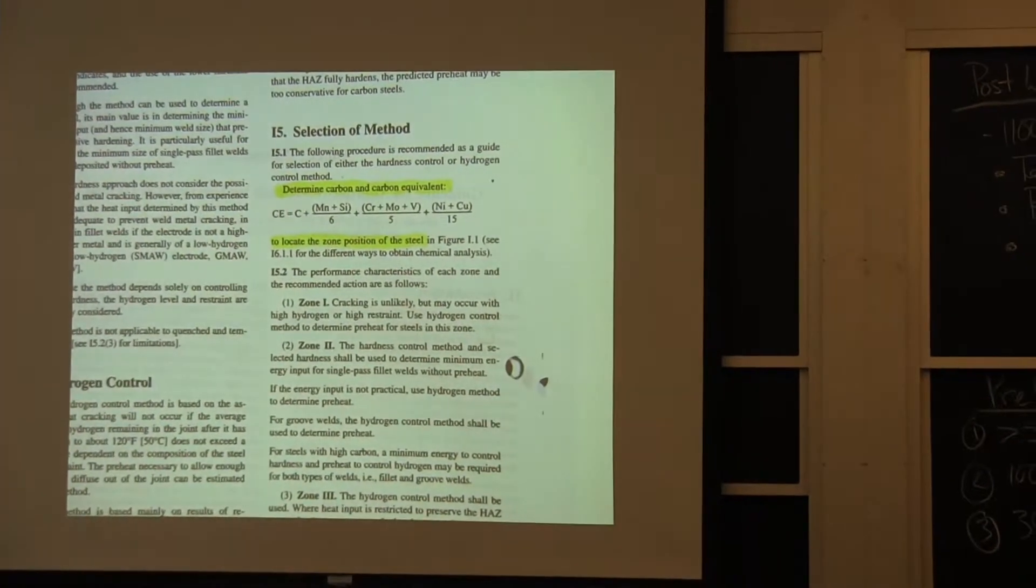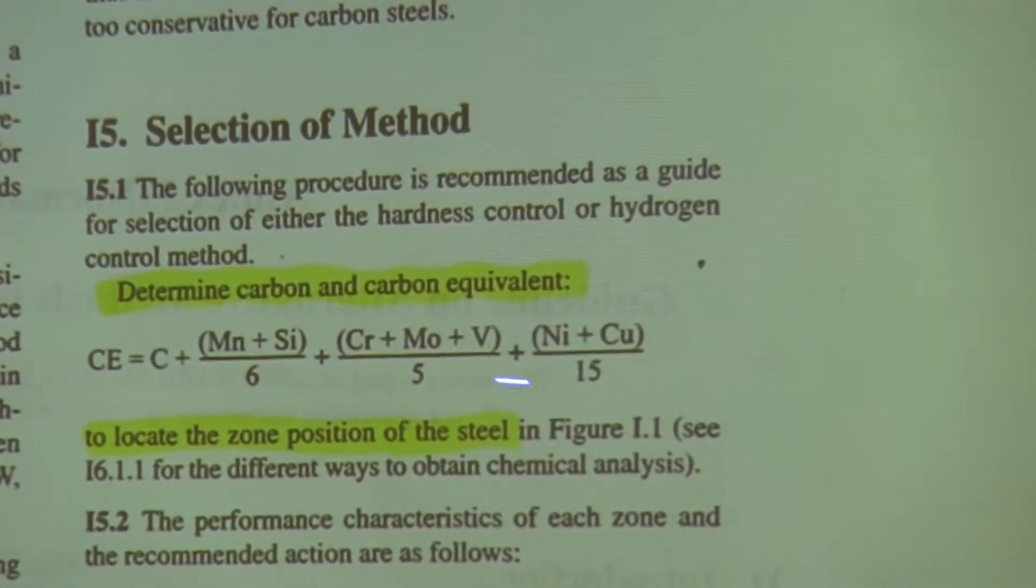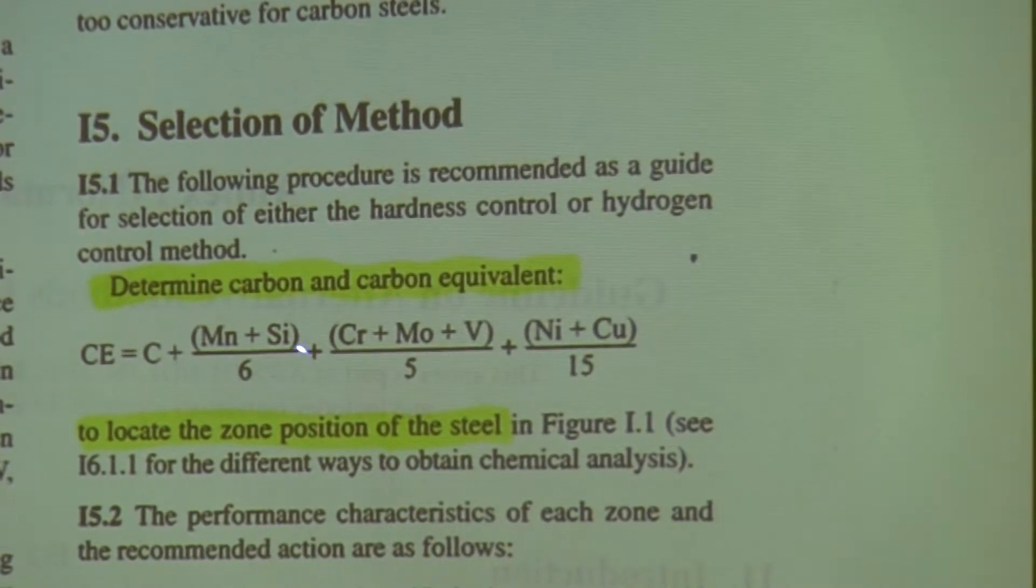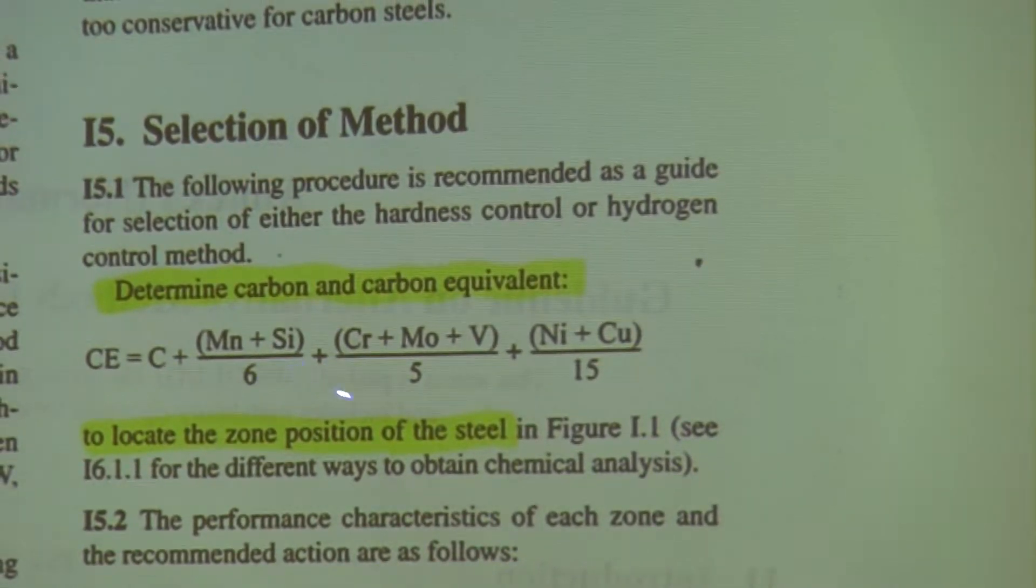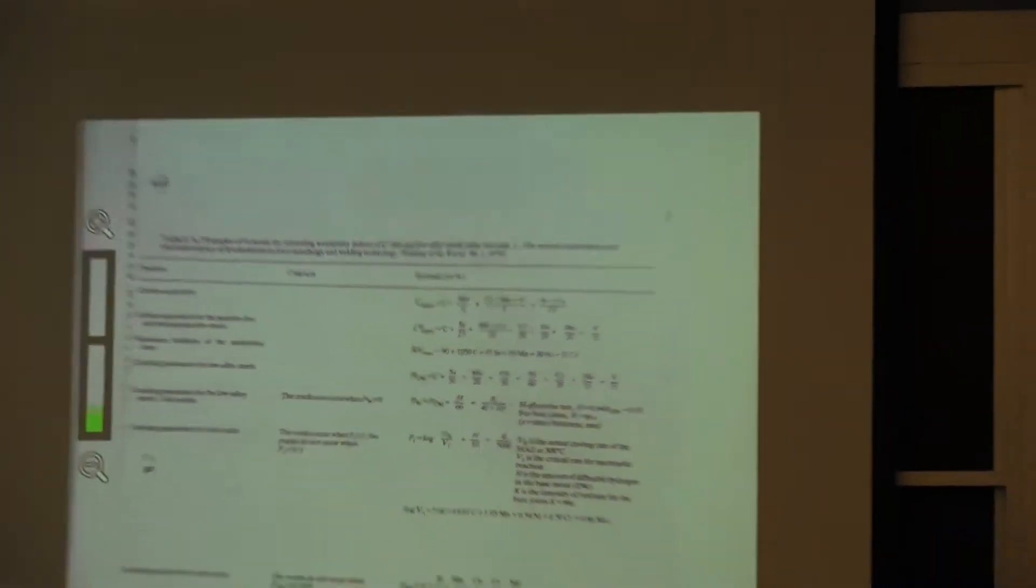So if I have a steel, I need to know whether it has low depth of hardening or significant depth of hardening. And so in the welding industry since the last 70 years we've been talking about carbon equivalent. The carbon equivalent is a measure of the hardenability of the steel. The carbon equivalent is equal to the amount of carbon plus manganese and silicon divided by 6 plus chromium, molybdenum, and vanadium divided by 5 plus nickel and copper divided by 15.